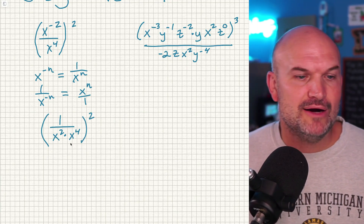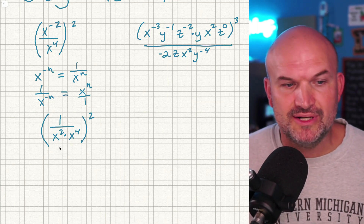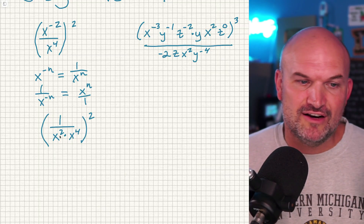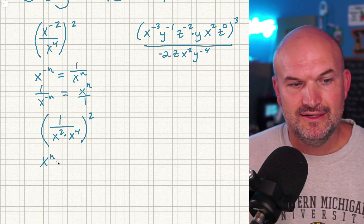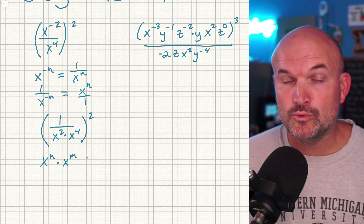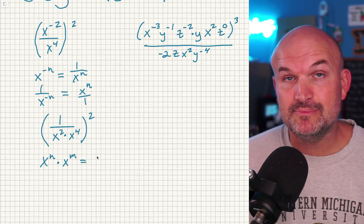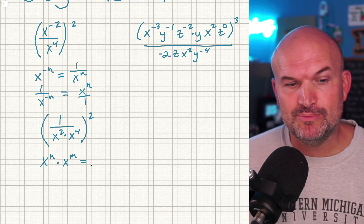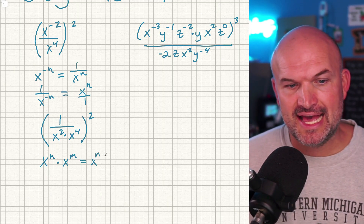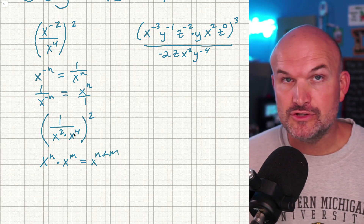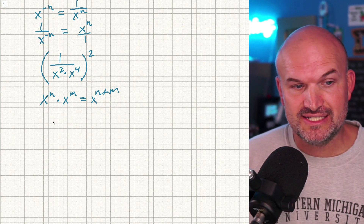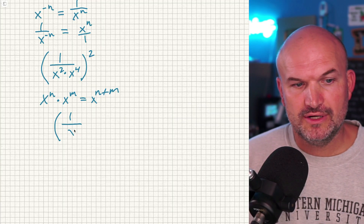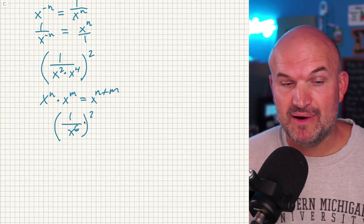Now I just need to remember how to multiply exponents. Do not make the mistake of multiplying their powers. If I have x to the n times x to the m, the rules of exponents tell us to simply add those two powers together — that's going to be x to the n plus m. So in this case, two plus four is going to give us x to the sixth.